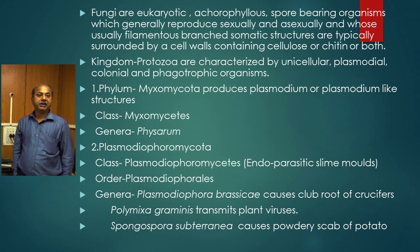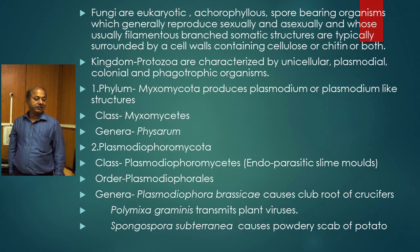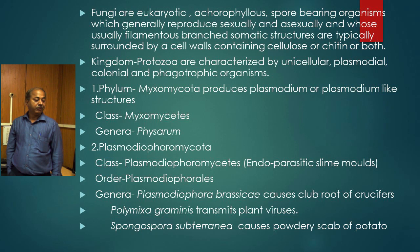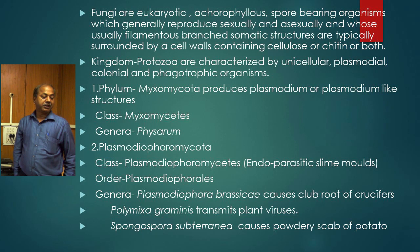In Myxomycota, it produces plasmodium or plasmodium-like structures, and the genera are Physarum. While in Plasmodiophoromycota, it is an endoparasitic slime mold coming under Plasmodiophorales. The genera are Plasmodiophora brassicae, Polymyxa graminis, and Spongospora subterranea. Plasmodiophora brassicae causes club root of crucifers, Polymyxa transmits plant viruses, and Spongospora subterranea causes powdery scab of potato.